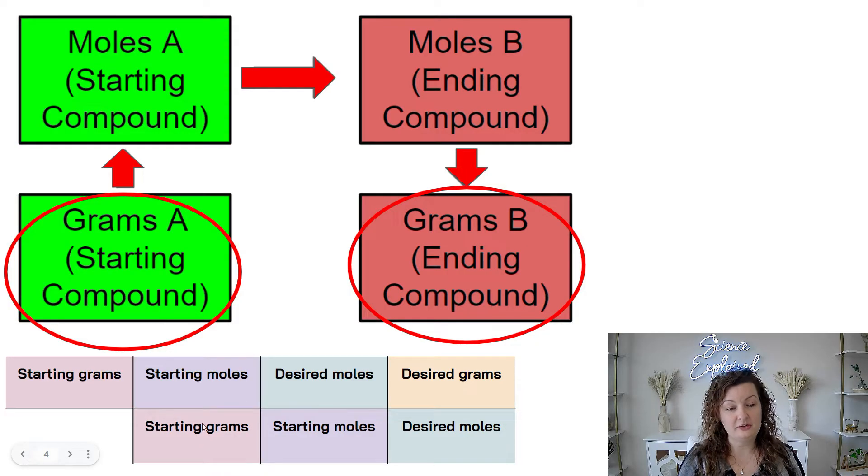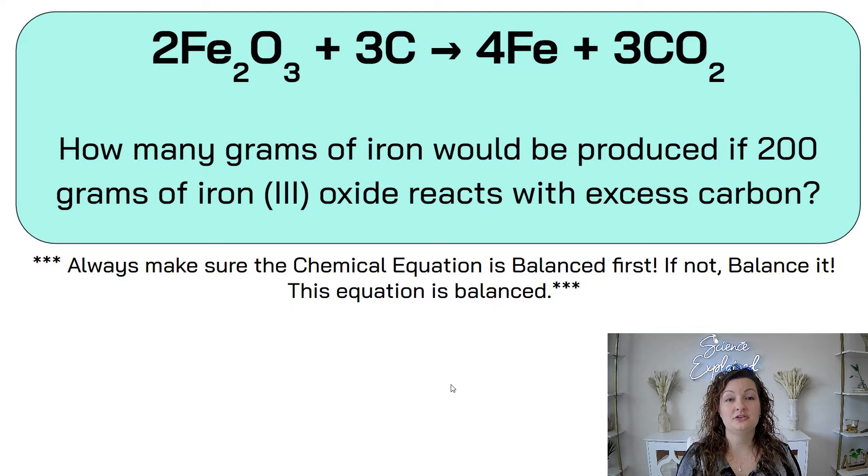And then we're going to transfer those moles into grams finally, which is what the question asked for. I put kind of a bridge down here and I color coded it so that you can remember that diagonal down needs to be the same units all the time so we can cancel those out. So starting grams, starting grams, starting moles, starting moles, desired moles, whatever the question's asking you for, and the same thing diagonal down, and then your desired grams. So let's get into this and try it.